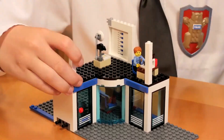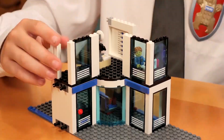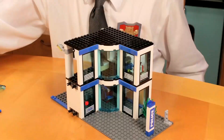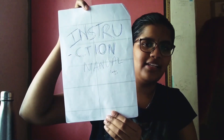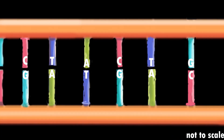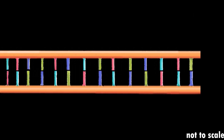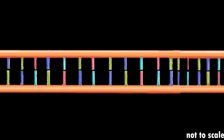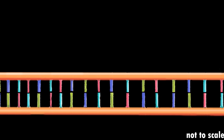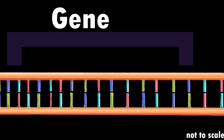Why do you look the way you do? Think of yourself as a Lego set. The output you see is what you look like, and the instructions used to build the set — that's DNA. DNA is made by the base pairing of nucleotides. These nucleotides can make unique combinations. A segment of DNA is called a gene.